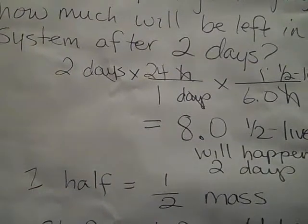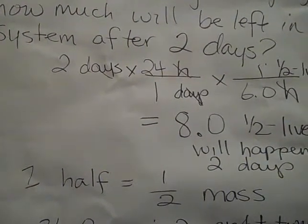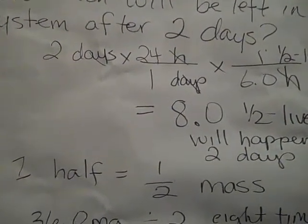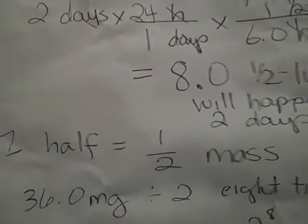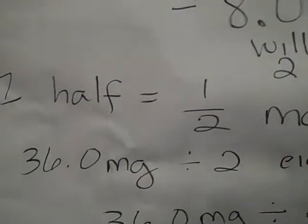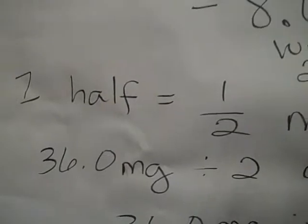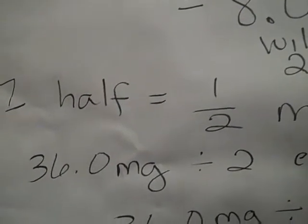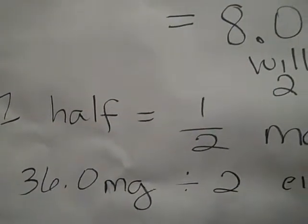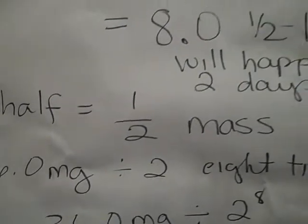So one half-life equals half of our mass. We can take those 36 milligrams, and one way to figure out how much will be left after those eight half-lives is to divide by two eight times. You might make some mistakes that way.